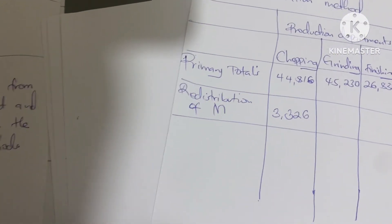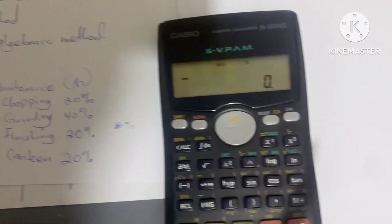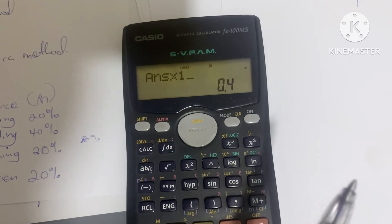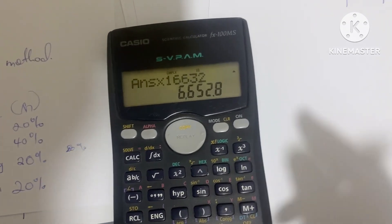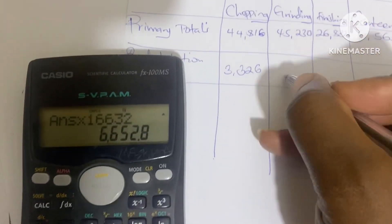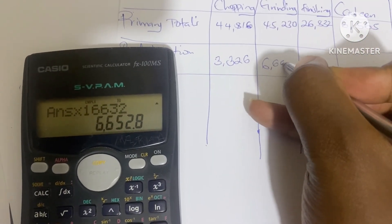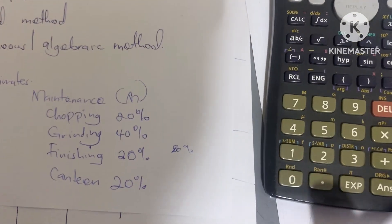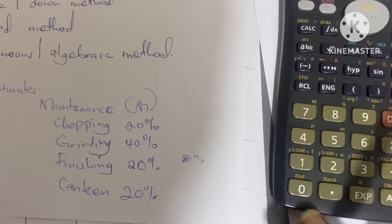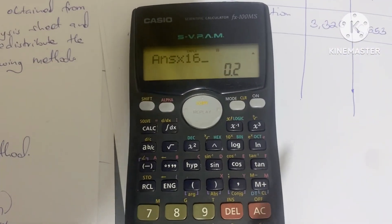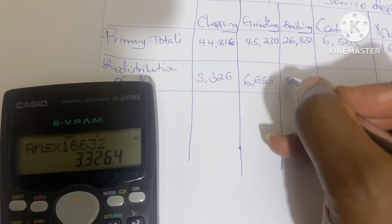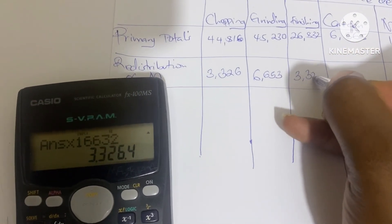For grinding it is going to be 40 out of 100 times 16632, and we round off to get 6653. For finishing it is going to be 20 out of 100 times 16632, which gives us 3326. For canteen it also has 20%, so it also gets 3326.